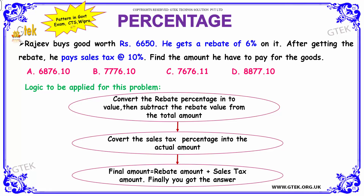This is an interesting as well as important question, as it has appeared in government CTS and Wipro exams. Rajiv buys goods worth rupees 6650 and gets a rebate — that is, a reduction of 6 percentage on it. After getting the rebate, he pays sales tax for that particular product at 10 percentage. We have to find out the total amount that he had to pay for the goods.